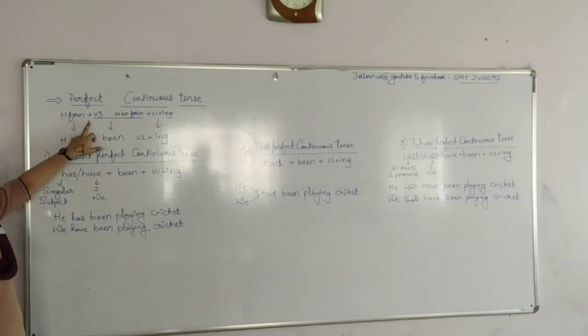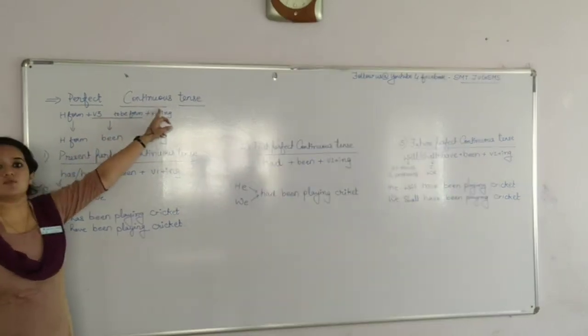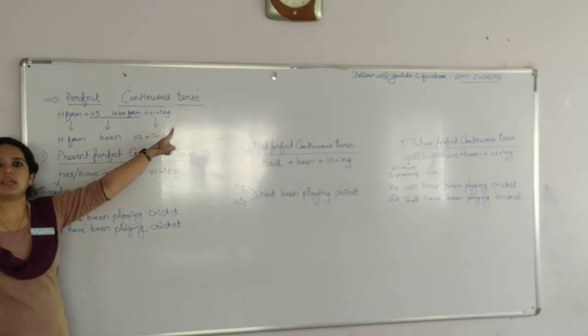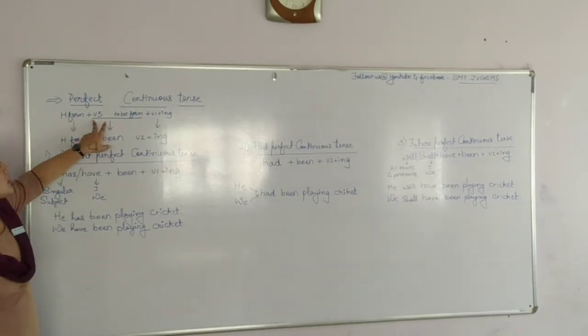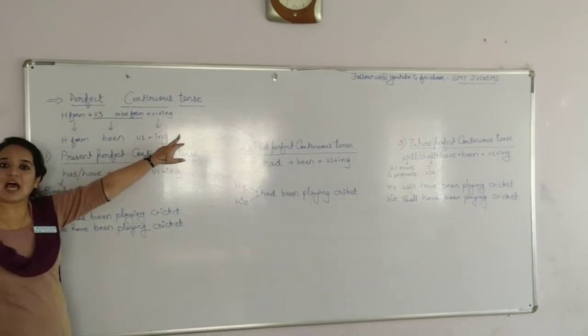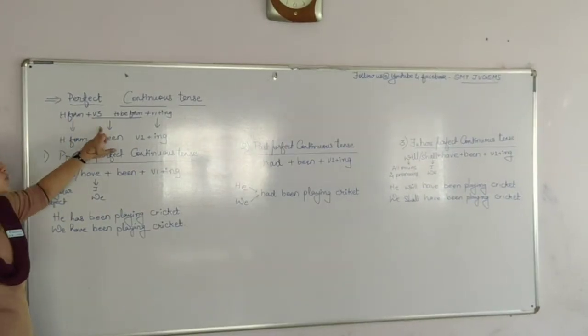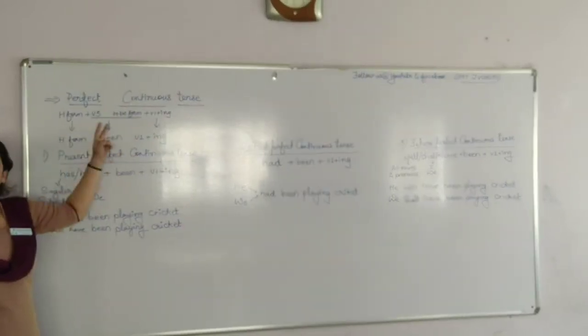What is perfect? That is H form plus V3. What is continuous form? That is to-be form plus V1 plus ING. Now, how is it possible to use V3 and V1 plus ING together? How is it possible to use H form and to-be form together? We cannot use all these things together.